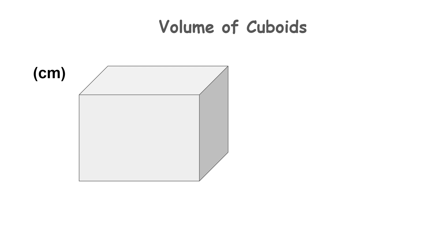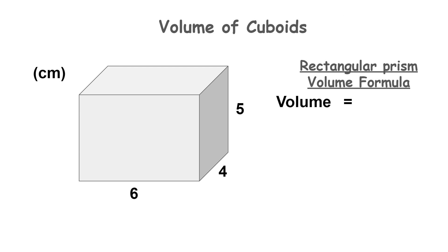Let's calculate the volume of one more cuboid — this time a rectangular prism with a length of six centimeters, four centimeters wide, and five centimeters high. To calculate the volume of a rectangular prism we use the same formula we used for the cube, which is capital B multiplied by H, where capital B stands for base area and H stands for height.